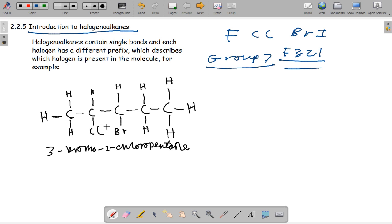To name these molecules: 3-bromo because it's on the third carbon chain, and 2-chloro because it's on the second. So this will be 3-bromo-2-chloro-pentane. We do it in alphabetical order. If there is more than one halogen, then alphabetically name it.